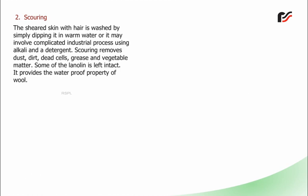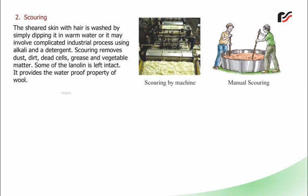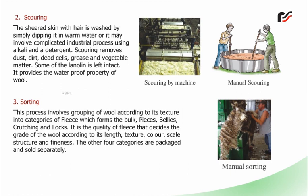Second is scouring: the sheared skin with hair is washed by simply dipping it in warm water, or it may involve a complicated industrial process using alkali and a detergent. Scouring removes dust, dirt, dead cells, grease and vegetable matter. Some of the lanolin is left intact, which provides the waterproof property of wool. Third is sorting: this process involves grouping of wool according to its texture into categories of fleece — the bulk, pieces, bellies, crutching and locks. It is the quality of fleece that decides the grade of the wool according to its length, texture, colour, scale structure and fineness.